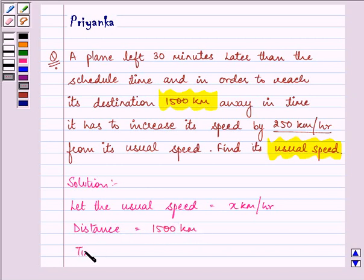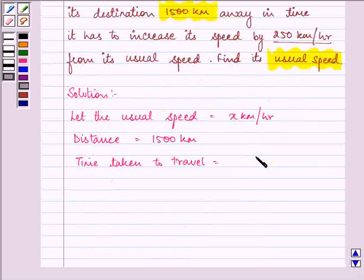So time taken to travel will be equal to distance upon speed, that is 1500 upon x hours.